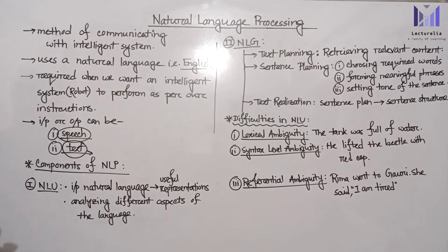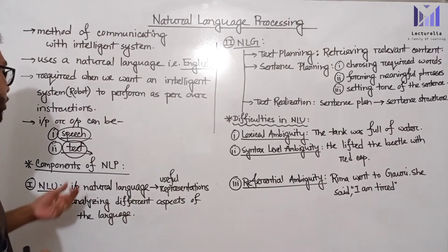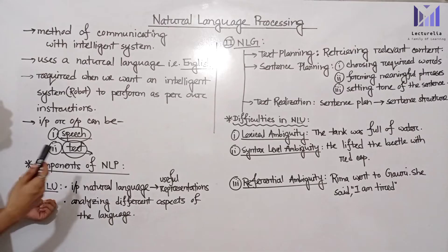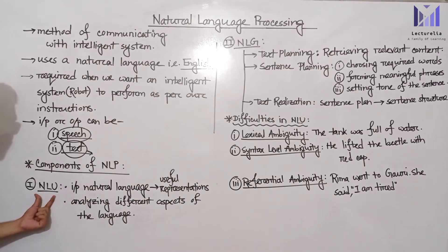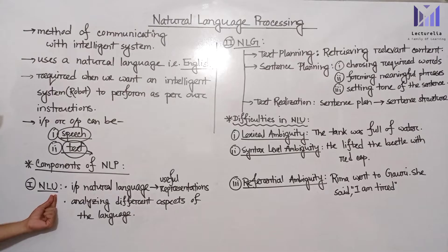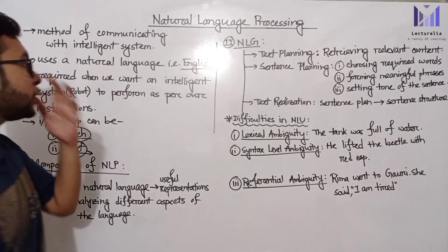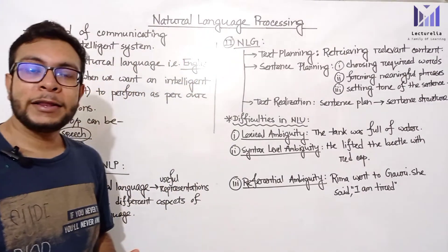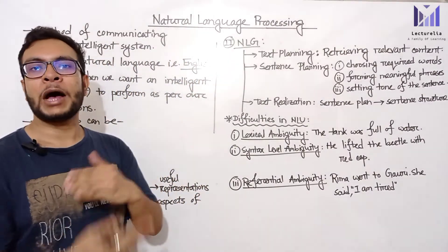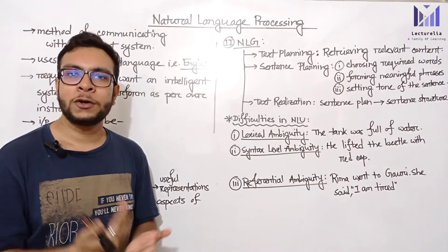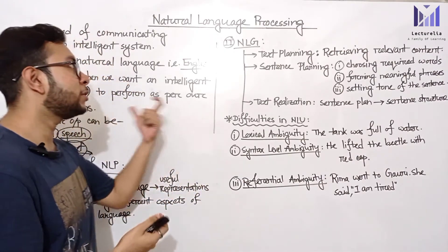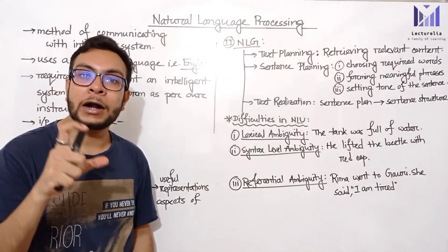The components of NLP are NLU and NLG. NLU stands for Natural Language Understanding, and NLG stands for Natural Language Generation. The first component is Natural Language Understanding, which handles the input natural language and converts it into a useful representation.